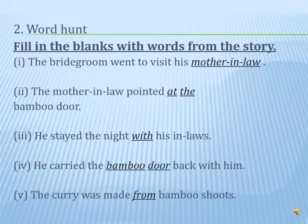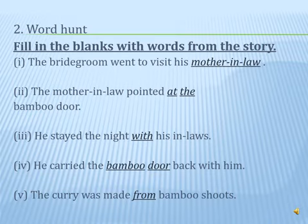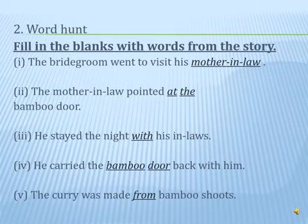Here we finish with all of Unit 1. Students, you have to copy down this exercise in the classwork. Give the title Bamboo Curry and copy down the exercise. You can copy the questions and write the answers by yourself, as I hope you understood the story. After writing the answers, you can check them with the video. This is how you will learn it properly. Whatever we do, revise it again and again — that is how you will learn it. So here we finish with Unit 1. Meet you soon with the next video. Stay safe. Thank you.